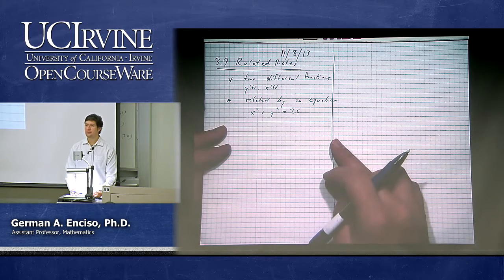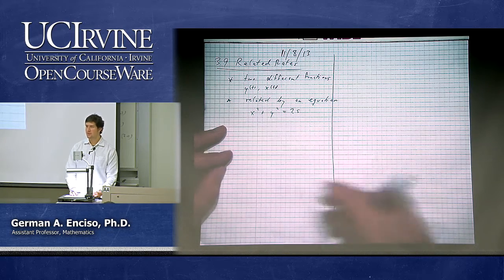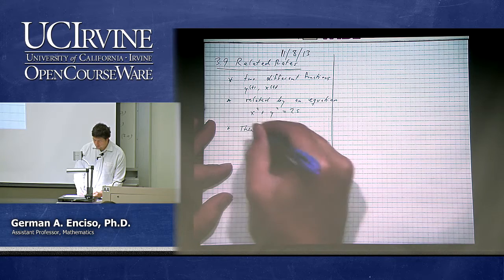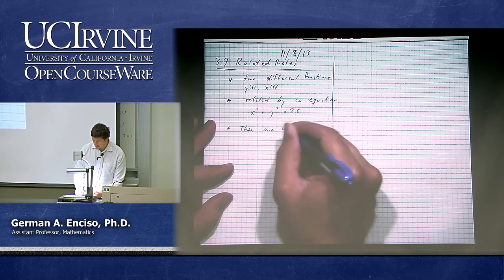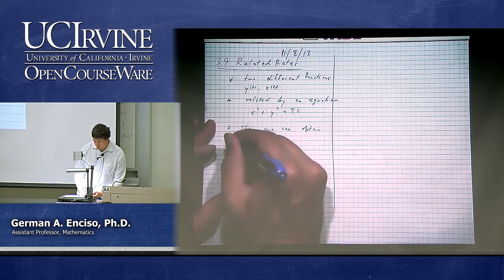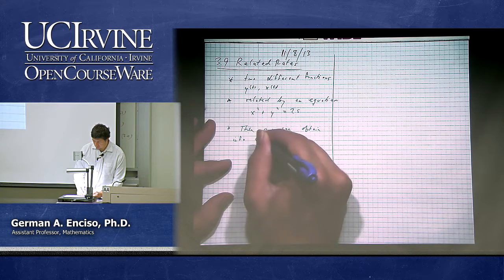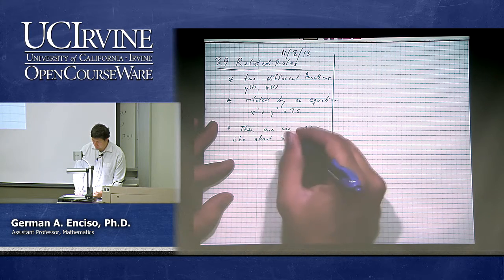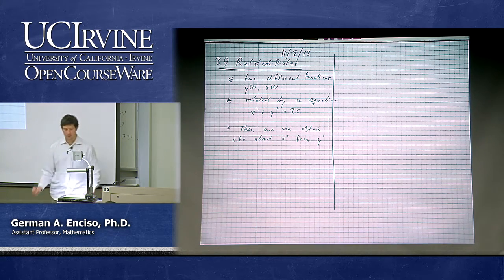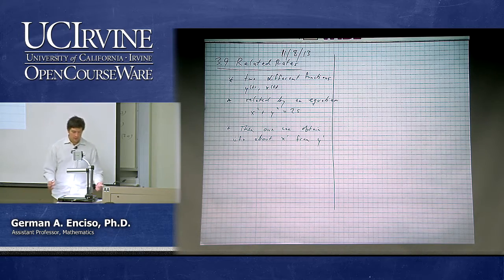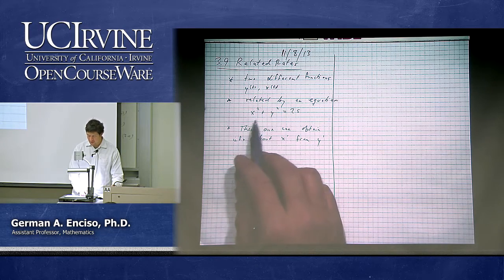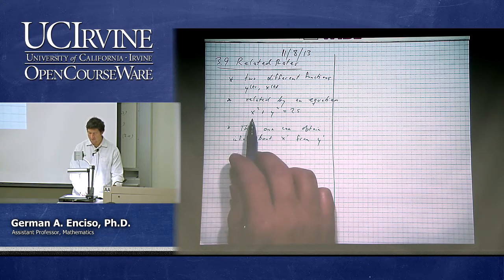Graphically, they have to be on a circle — that means they have to lie on the circle with radius 5. So then, one can obtain information about x prime of t from information about y prime of t. You know the relation between the two functions, and you know how fast y is changing, and you want to find out how fast x is changing.